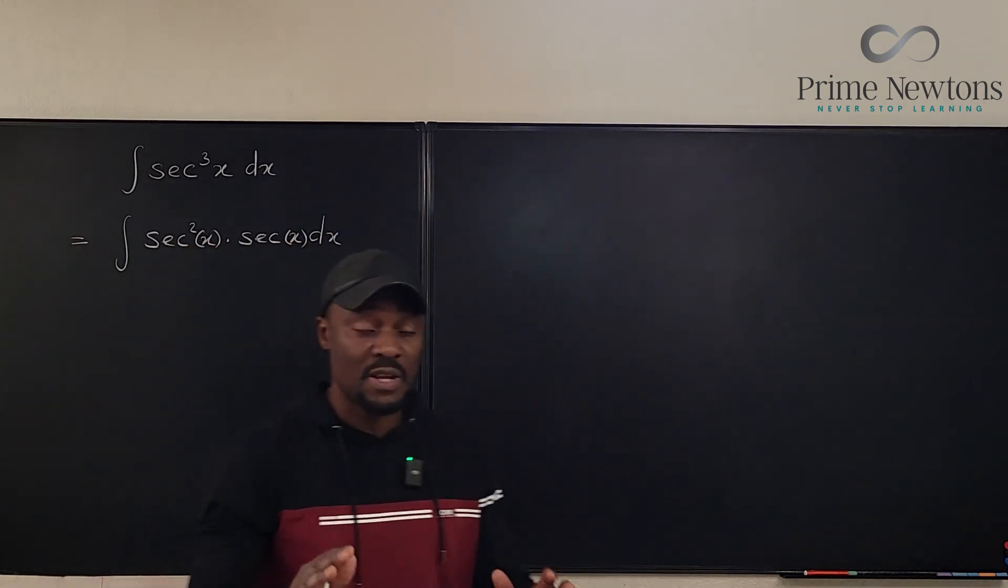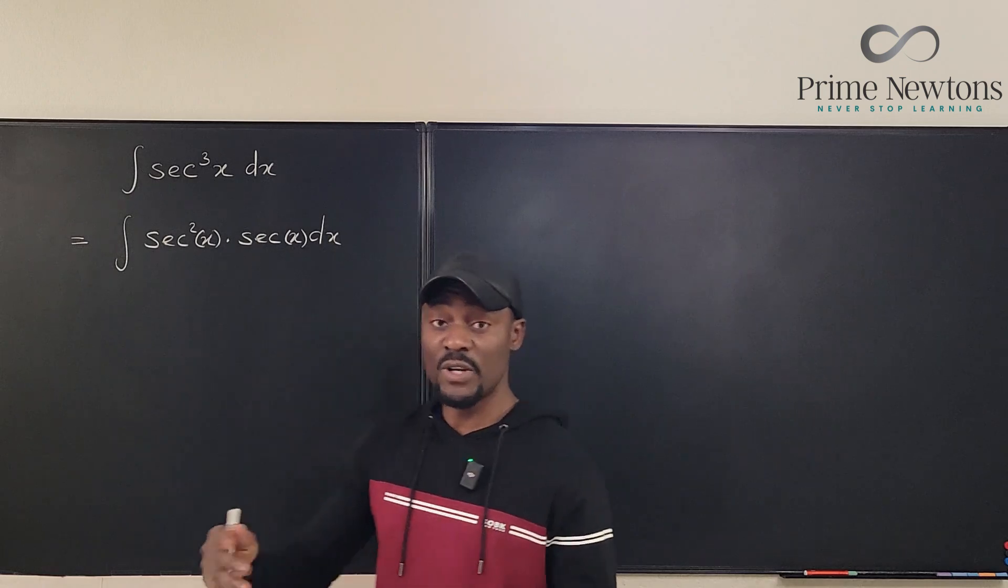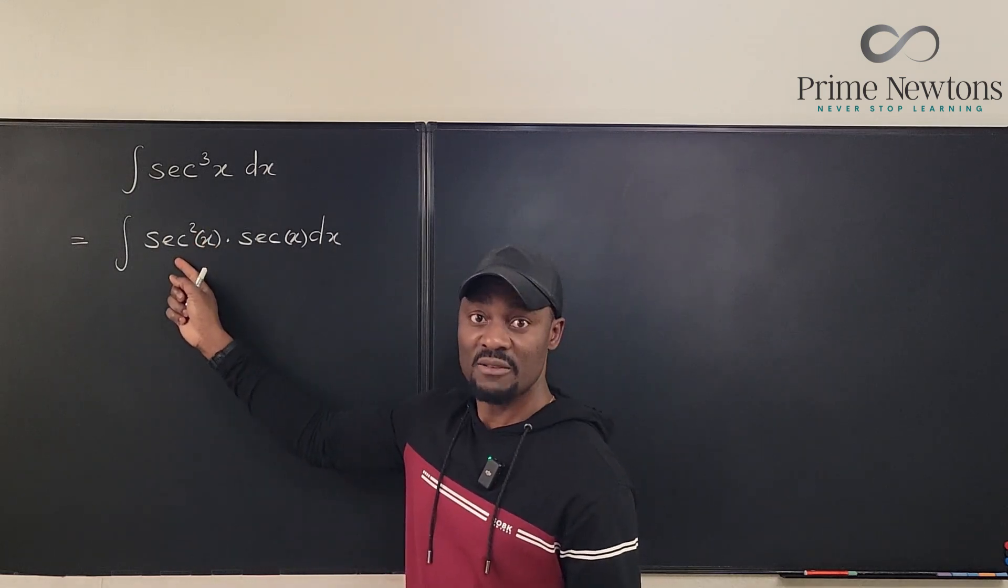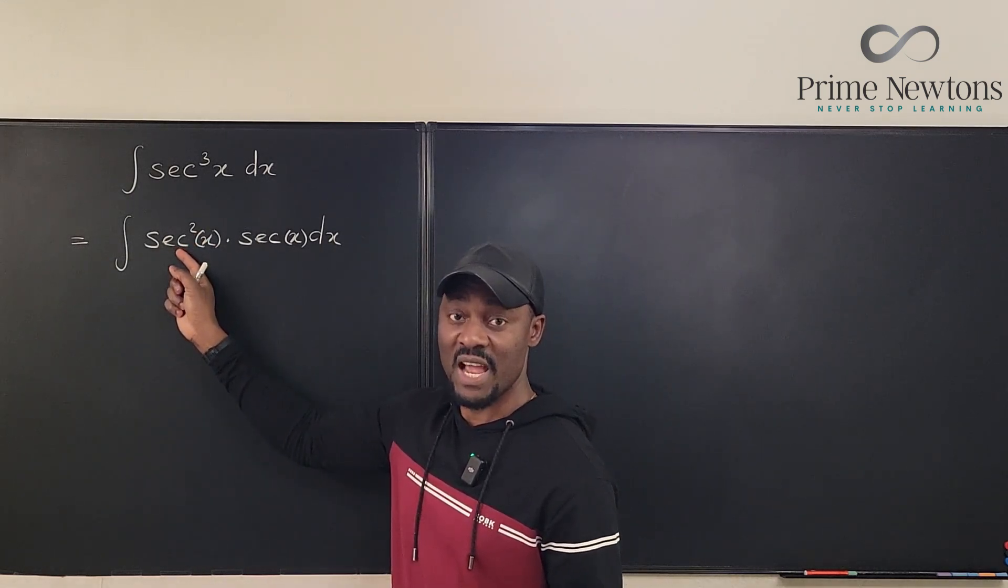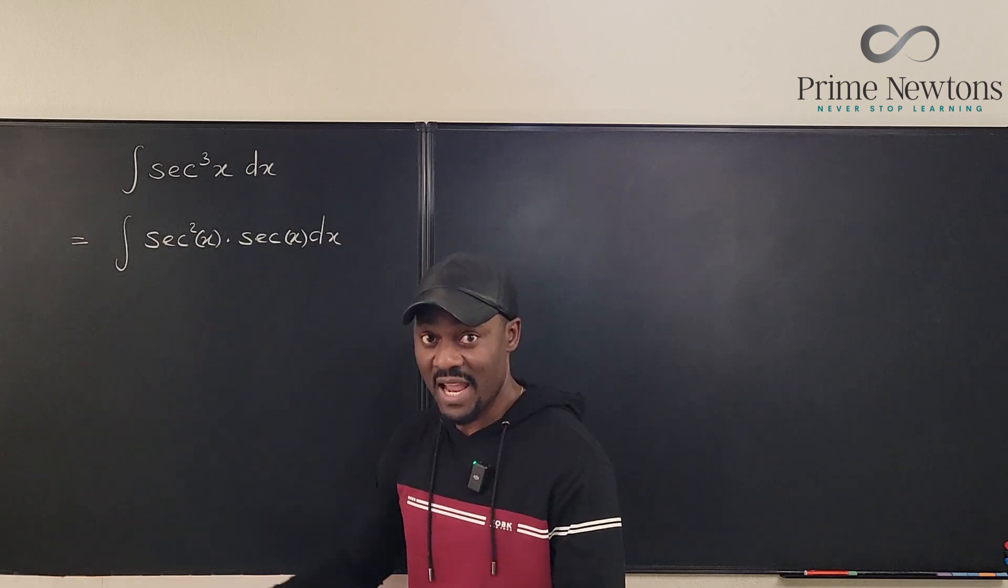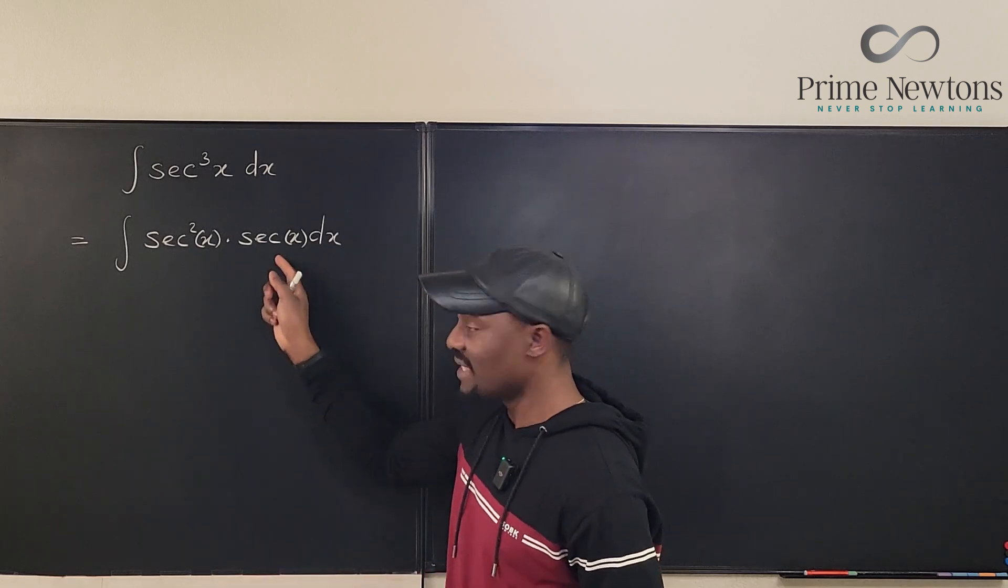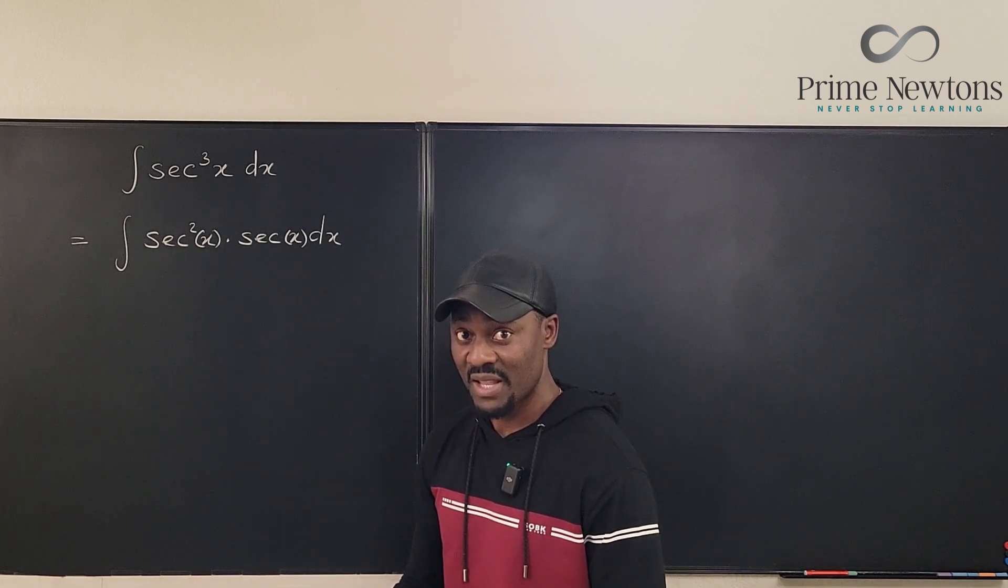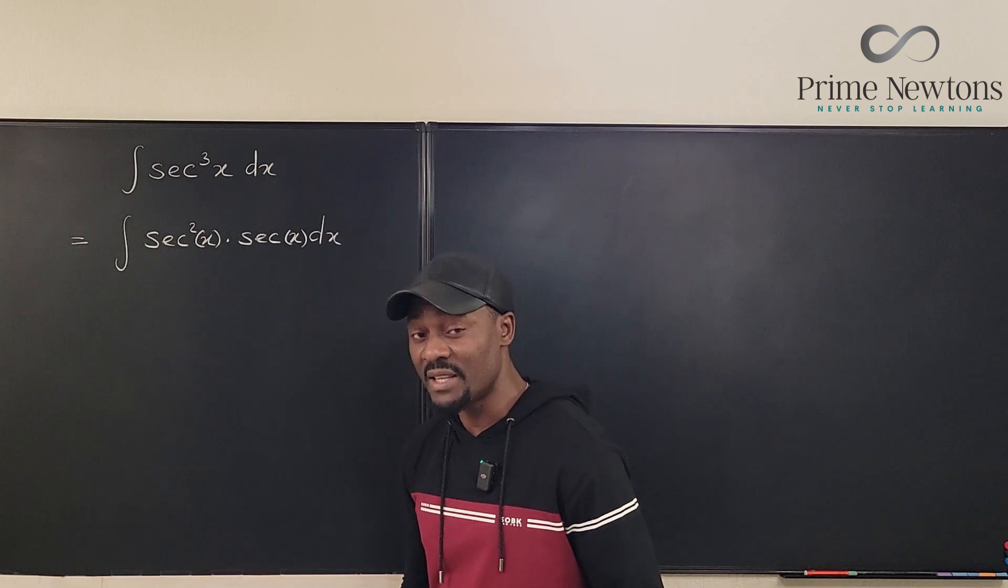So it is the product, one of them is easy to integrate. Which one? The secant squared. Because if we integrate secant squared dx, we're gonna get tan x and we're done. But the secant x is actually the problem because we don't know how to integrate it.